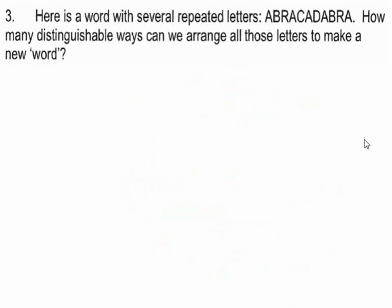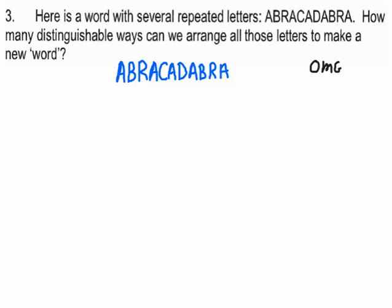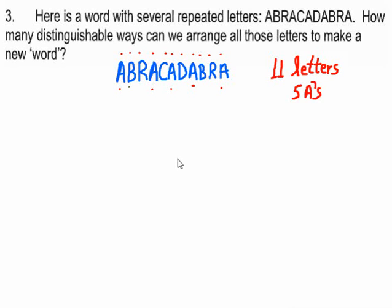Abracadabra — how many ways can you arrange all the letters? There are 11 letters total. There are five A's, two B's, two R's, one D, and one C. That accounts for all 11 characters.